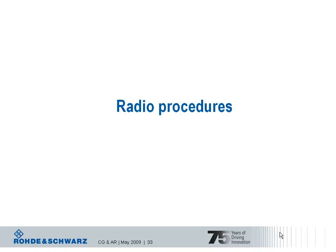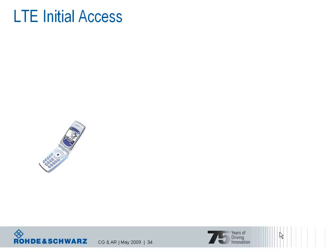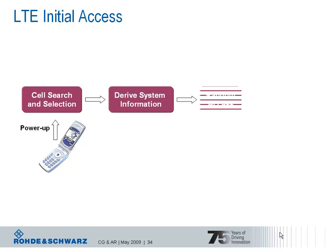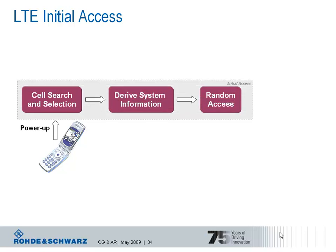The recent sections gave us the background, and we can now look at the essential LTE radio procedures. As in every mobile communication system, also in LTE, a terminal needs to follow certain steps before it can receive or transmit data. After powering up the device, the UE will start with the cell search and cell selection procedure, followed by derivation of system information and execution of the random access procedure. This is summarized as LTE initial access. After this procedure, the terminal is able to receive and transmit its user data.